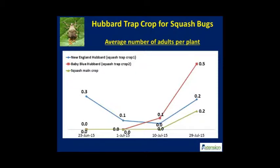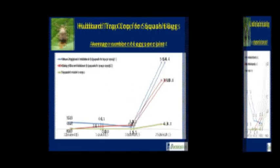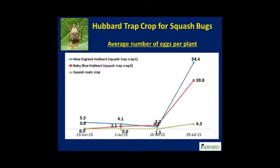The next slide shows the egg counts on trap crops that we have seen in our studies. Both the baby blue and New England Hubbard varieties had 10 to 13 times more egg laying compared to yellow squash, or the main crop. Hubbard squash varieties had numerous nymphs hiding under the large leaves with adults feeding close to the plant base.